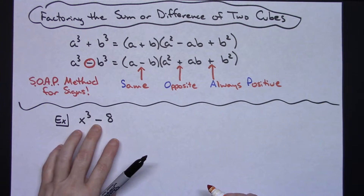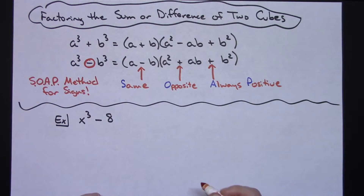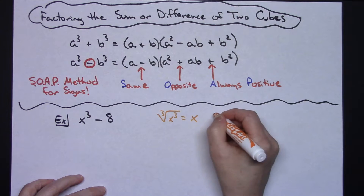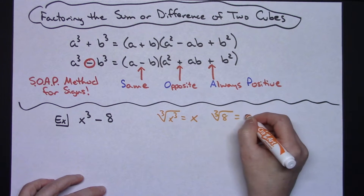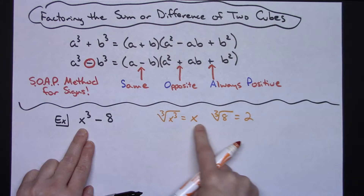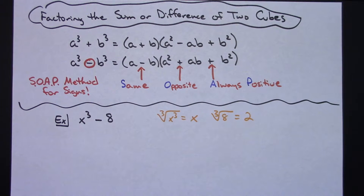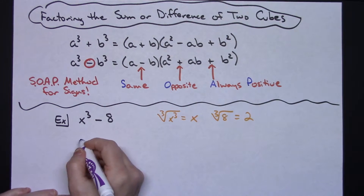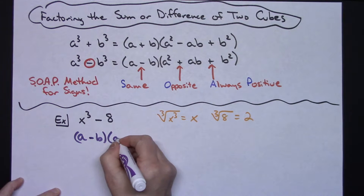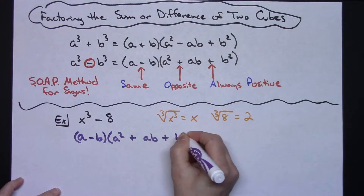I have a minus sign here, so this is going to be the difference of two perfect cubes — possibly if both of these are perfect cubes, and they are. I can take the cube root of x to the third and get an x. I can take the cube root of 8 and get a 2. So x is my a value and 2 is my b value. Let's write the formula down: a minus b, then a squared — opposite sign so plus — times ab, then always positive plus b squared.